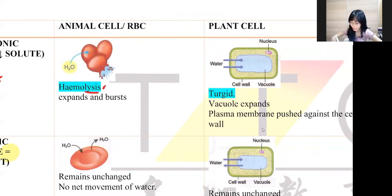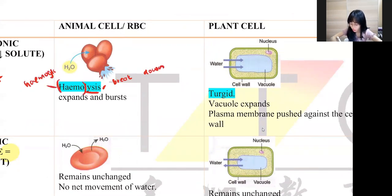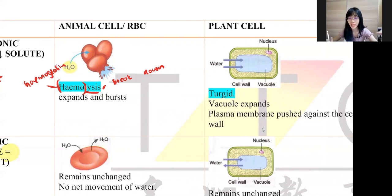Why? Because lysis means breakdown. Hemol refers to hemoglobin, which obviously refers to the red blood cell. So it's a breaking down of a red blood cell. We call this hemolysis — because water keeps diffusing into it when immersed into a hypotonic solution.